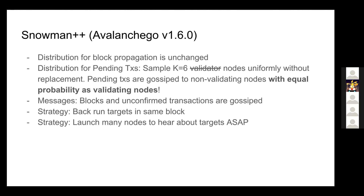Another key change was that rather than creating a block with your back-run transaction and propagating it to the network — as you'd done in the prior version — you actually couldn't do that anymore because of the designated block producers. So propagating your transaction to the block producer became quite important.